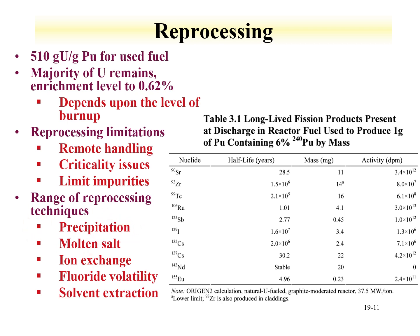As an example, one can look at a table of long-lived fission products present at discharge from a reactor used to produce one gram of plutonium containing 6% plutonium-240 by mass. Just from fission, one should have the masses of different fission products as shown in the table. One can also look at the activity of these fission products — for instance, neodymium-143 is stable and has no activity, while strontium-90 would have up to 10¹² dpm per gram of material produced. This doesn't mean all this material would be in the reactor product, but these fission products must be separated from the plutonium.